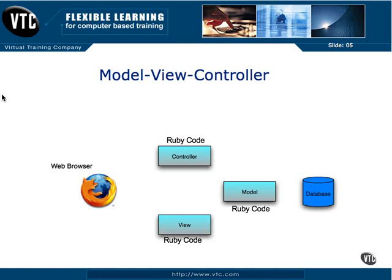The controller is the piece of code that orchestrates between the model, the view, and the database. It is what the user is interacting with when they call a URL — they're not actually calling a view URL, they're calling a controller URL. The controller in Rails takes care of generating which particular view and calling which model, and we'll see how to do that.